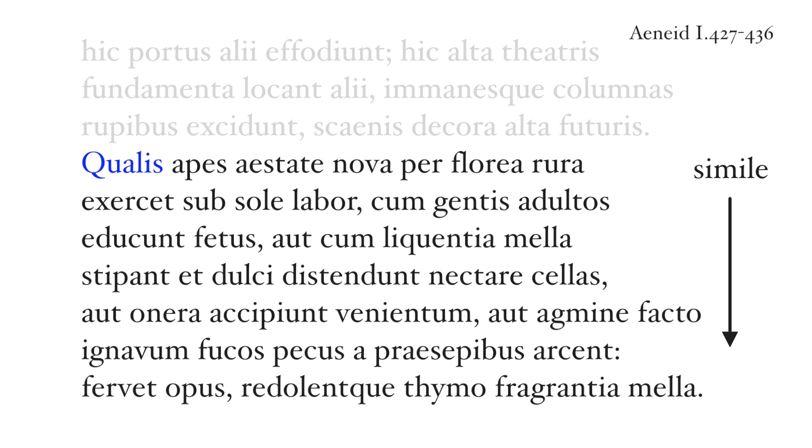The simile is at lines 430 to 436 and introduced by 'qualis,' meaning 'just as.' Latin, just like English, uses very specific words to introduce similes, and these often have meanings along the lines of 'like' or 'as,' as we saw with 'qualis' — 'just as' — in Virgil's bee simile.